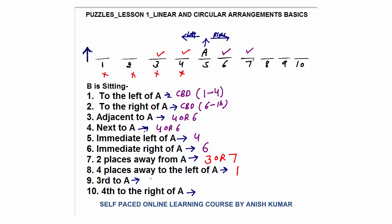Question: B is sitting third to A. 'Third to A' means — seat six is first, seat seven is second, seat eight is third on the right side. On the left side: seat four is first, seat three is second, seat two is third. So the answer is seat number eight or two. B sitting fourth to the right of A: first is seat six, then seven, eight, nine — so fourth to the right of A is seat number nine.